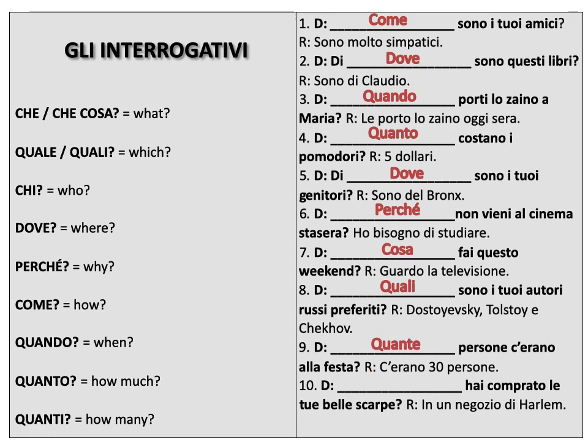Numero dieci. Blank hai comprato le tue belle scarpe? — In un negozio di Harlem. Blank, did you buy your beautiful shoes? Scarpa means shoe, the plural is scarpe — remember the rule, A goes to E. And hai comprato is just the past of 'to buy.' Answer: in a store in Harlem. Negozio means store. So what are we asking? Where? So: dove. Dove hai comprato le tue belle scarpe?